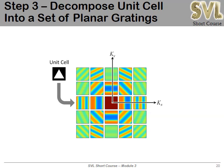Once we have the unit cell and input parameters, the first algorithmic step is decomposing the unit cell into a set of planar gratings. There are two parts: we FFT the unit cell to get the Fourier series coefficients — the weights or amplitudes of the planar gratings — and we analytically calculate the grating vectors associated with each term. Each term in the Fourier series has one grating vector and one Fourier series coefficient.